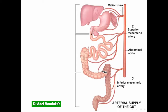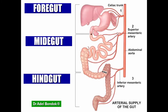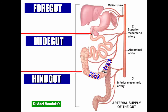We have three parts: foregut, midgut, and hindgut. The foregut extends from the lower third of the esophagus till the biliary orifice at the major duodenal papilla in the middle of the second part of the duodenum. The midgut terminates at the junction of the right two-thirds and left one-third of the transverse colon. The hindgut terminates at the junction between the upper half and lower half of the anal canal.